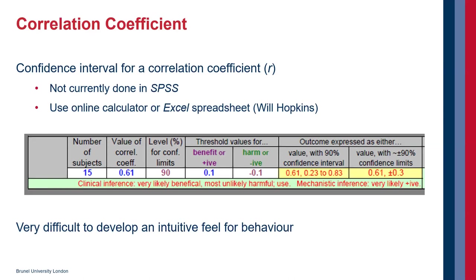But you can go online and find a calculator or you can find an Excel spreadsheet. And you can put in your values of the correlation coefficient and sample size, and it will give you a value for the confidence interval. But again, this is not very useful. It's hard to develop an intuitive feel for how it behaves, how the confidence correlation coefficient behaves.